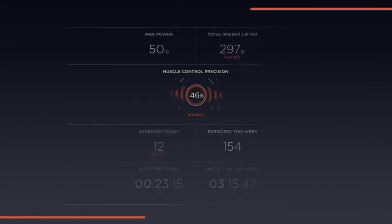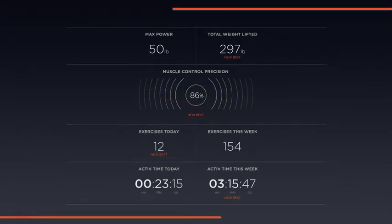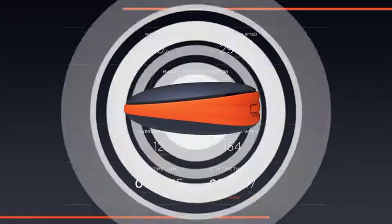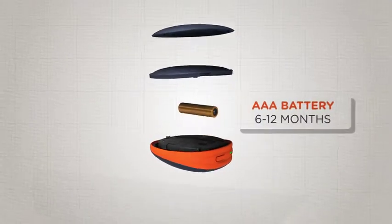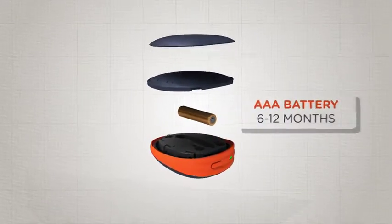The Active 5 app tracks your results and improvement over time. Oh, and one more thing. It comes with one replaceable AAA battery that lasts 6 to 12 months, so there's no need for daily charging.